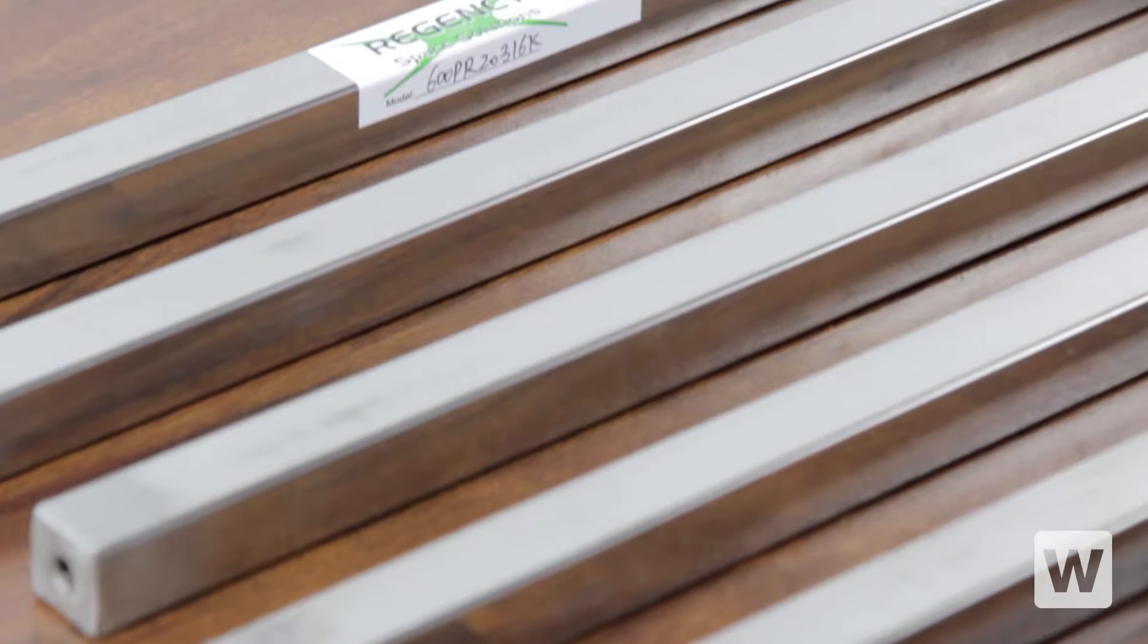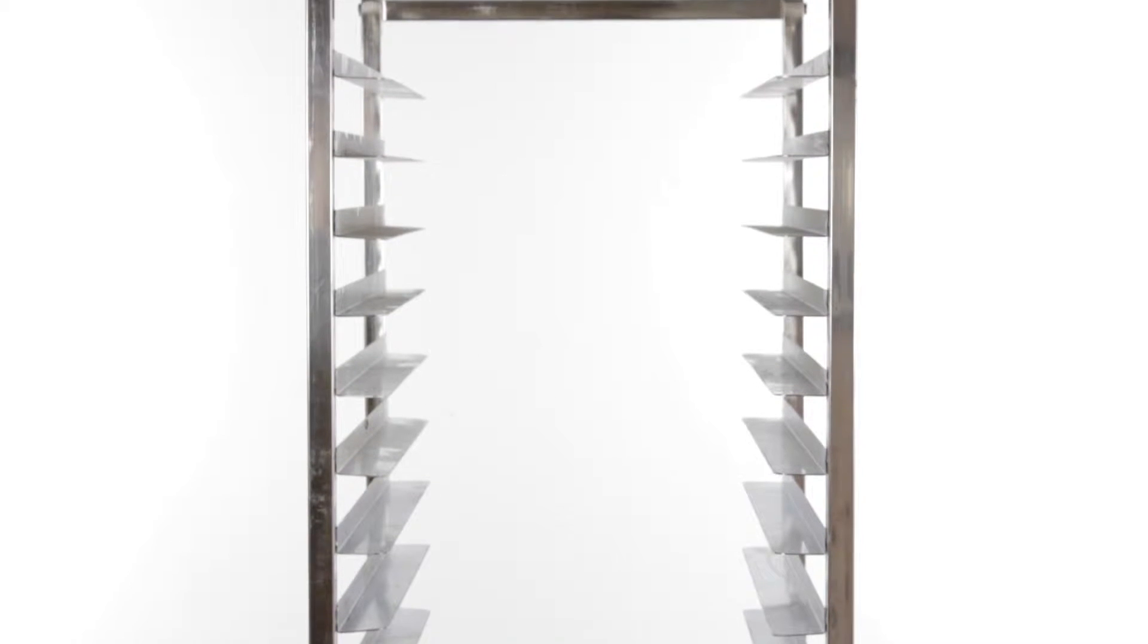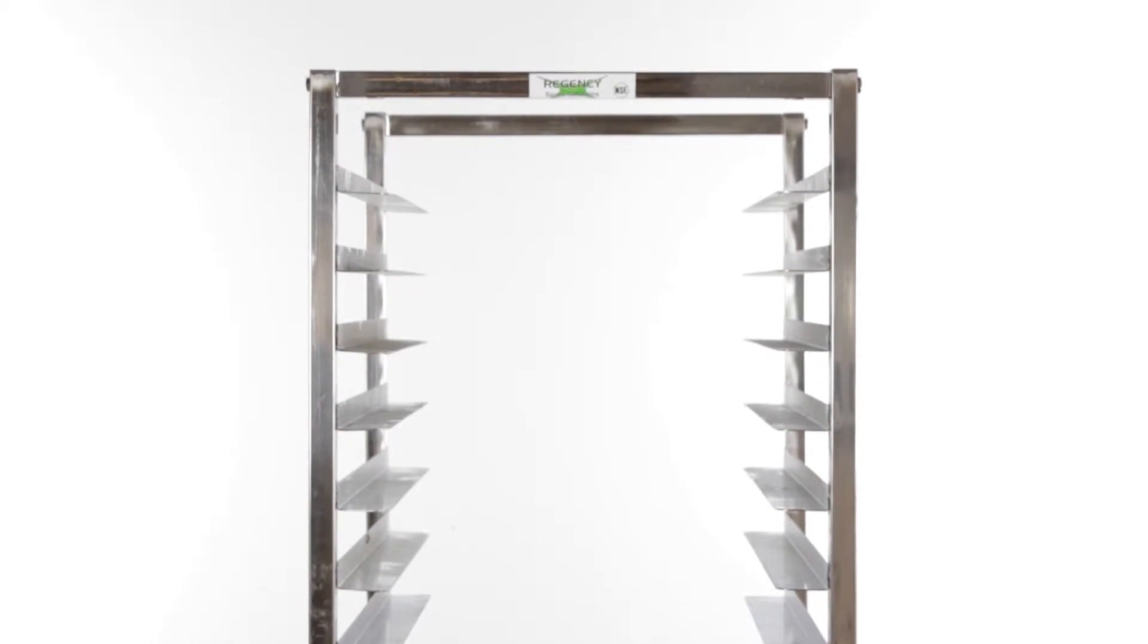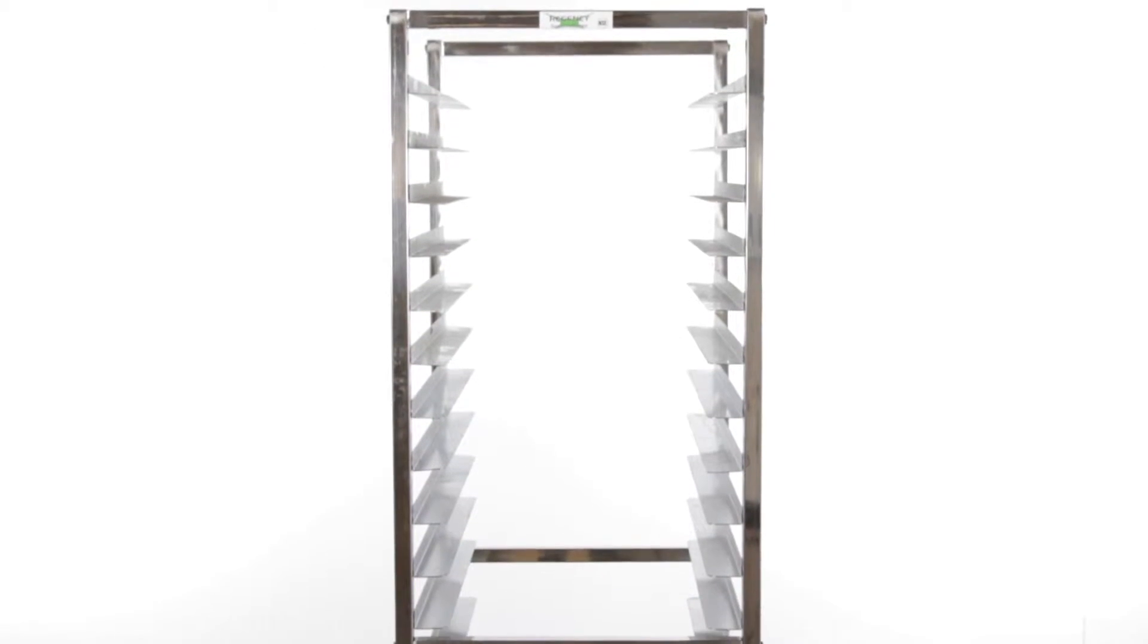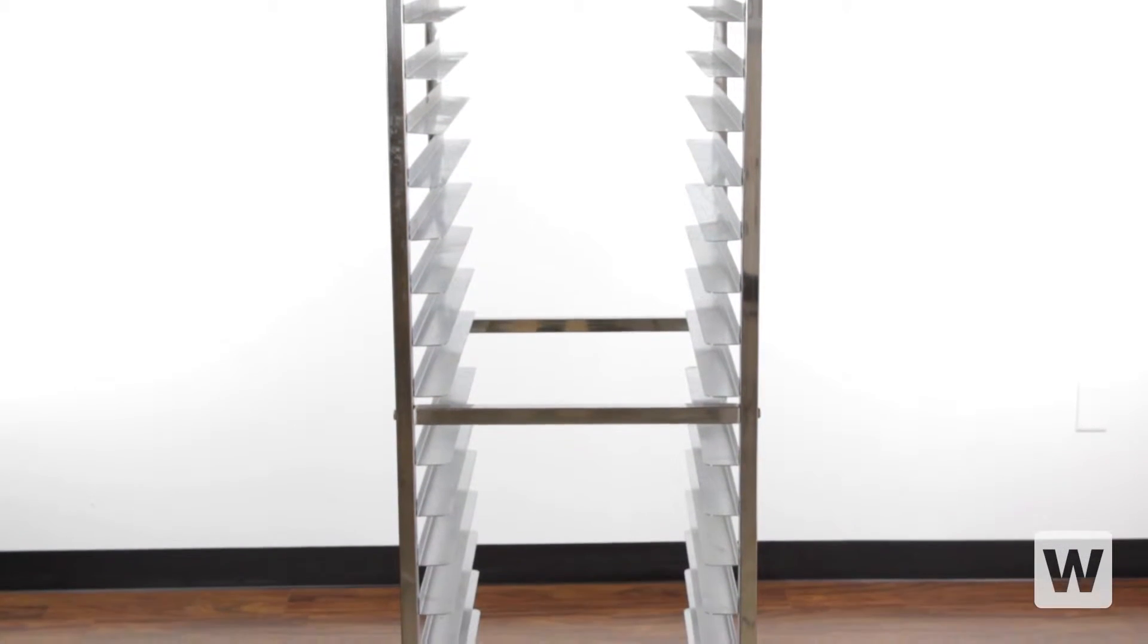But don't worry, these pan racks are easy to assemble. When assembled, this Regency pan rack has the durability and strength of a welded unit and can hold up to 20 full size pans or 40 half size pans with 3 inches of spacing between the slides.